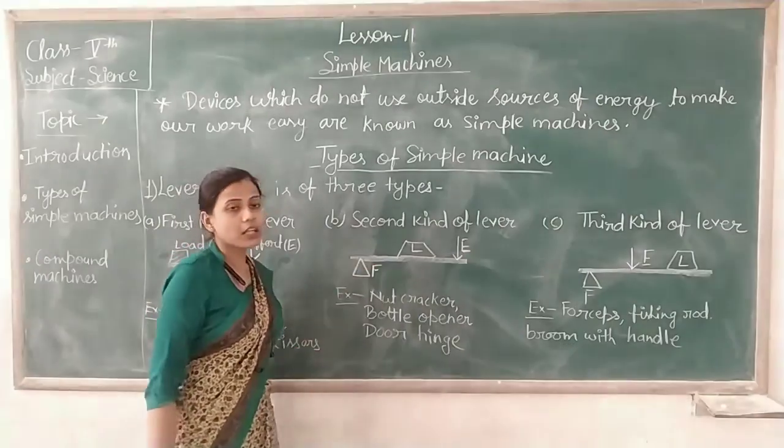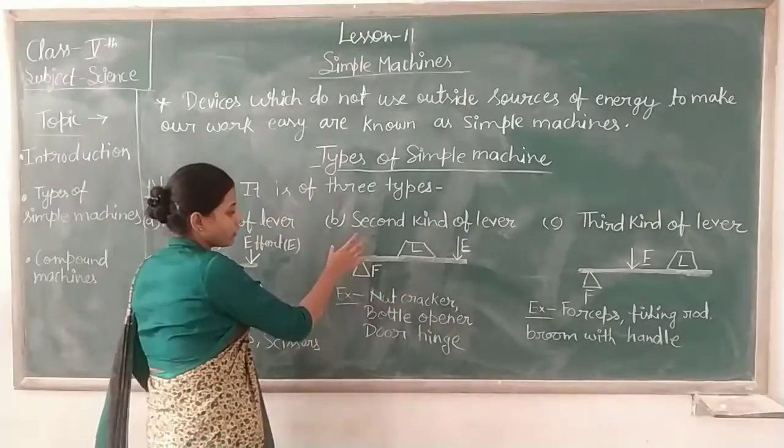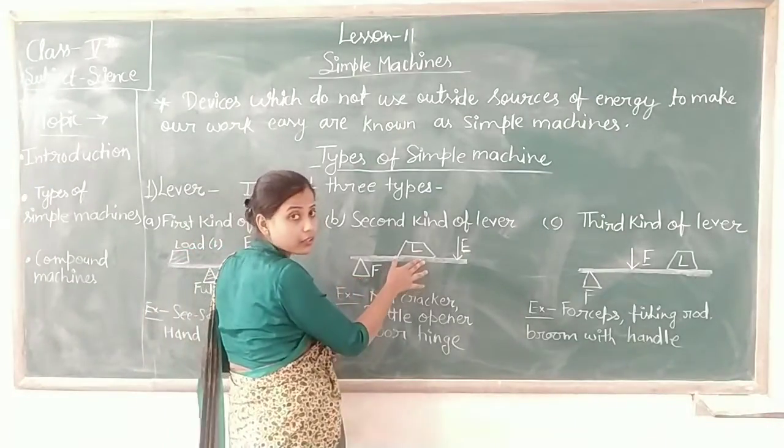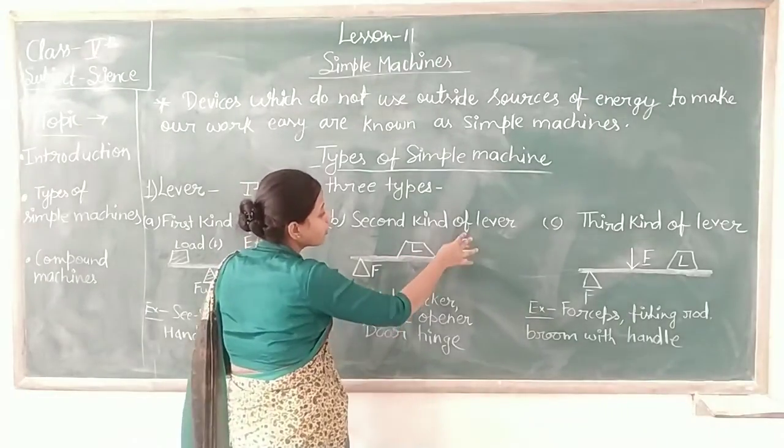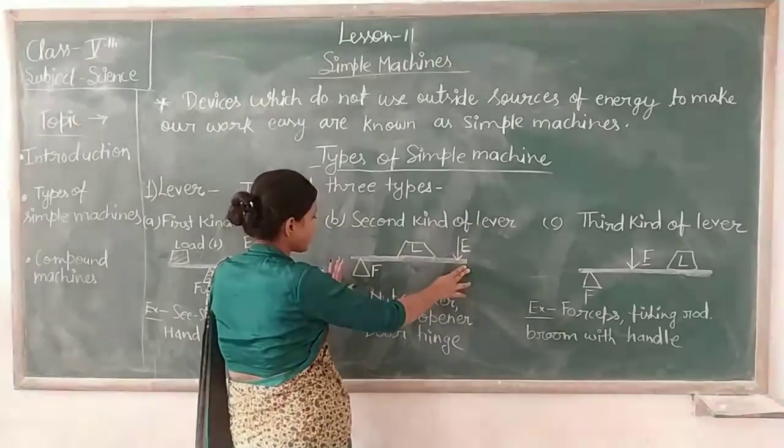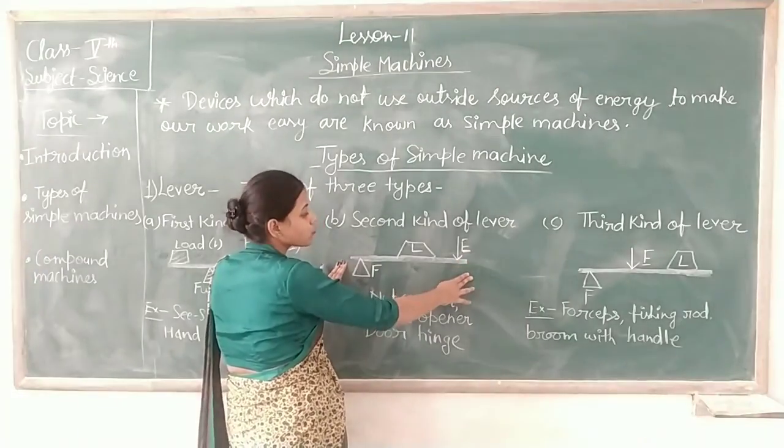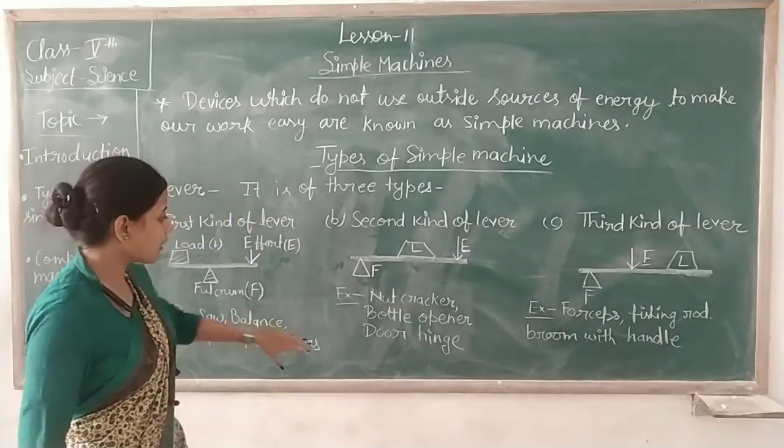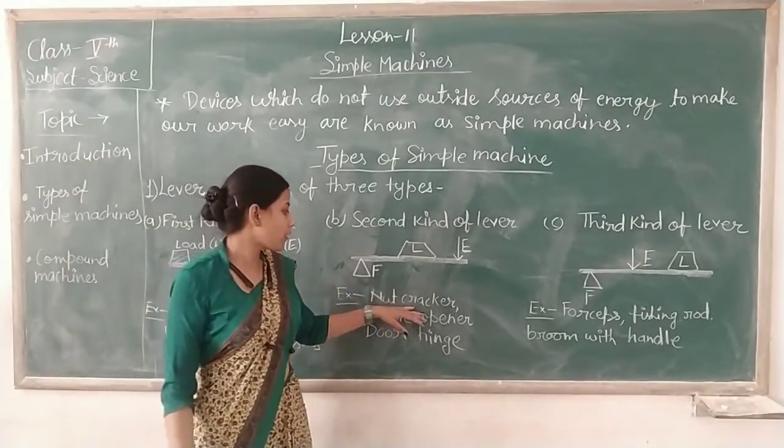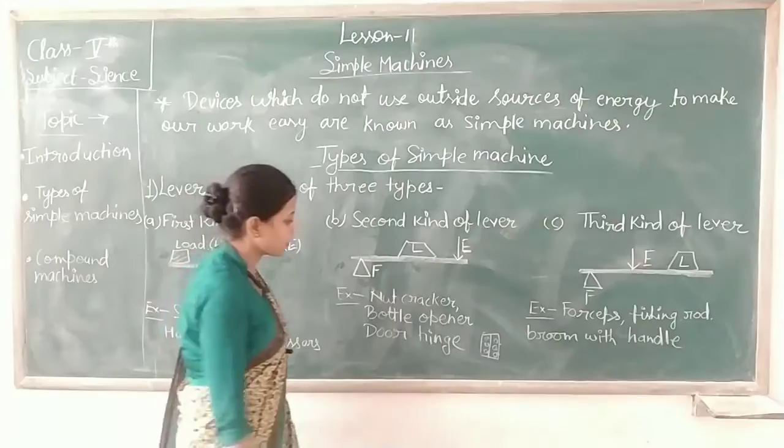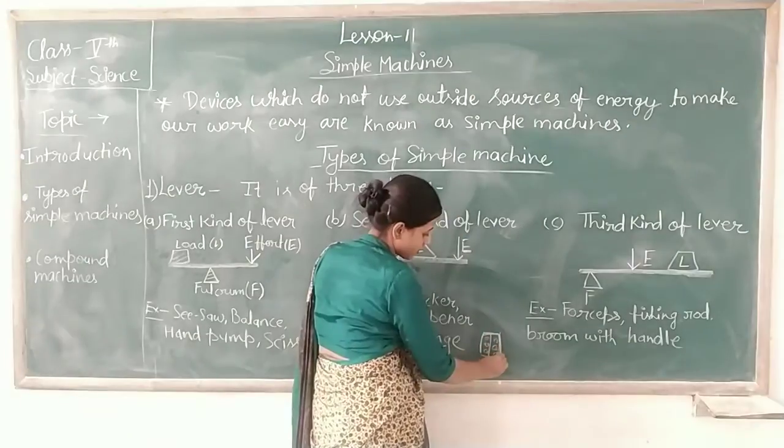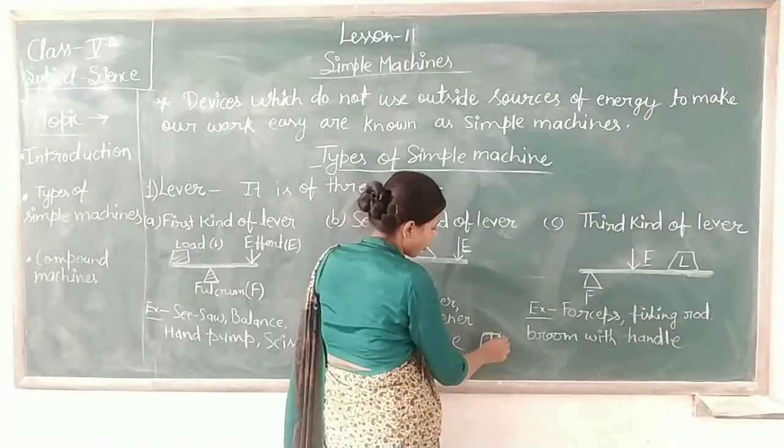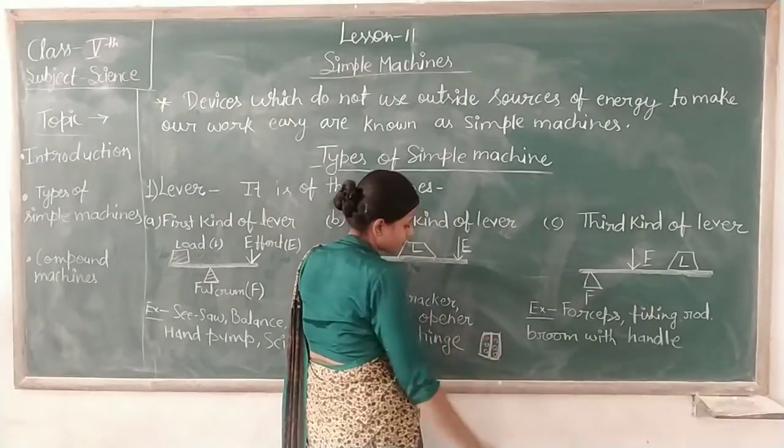Next ہے ہمارا second kind of lever. Second kind of lever میں جو fulcrum ہے یعنی جو base جس پر وہ ٹکا ہوگا lever, وہ یہاں ایک سرے پر ہوتا ہے. اور جو load ہے یعنی weight ہے وہ center میں ہوتا ہے. اور جو effort ہے یعنی force ہے وہ دوسرے سرے پر ہوتا ہے. اس کا example کیا ہے? Nut cracker, bottle opener, door hinge.